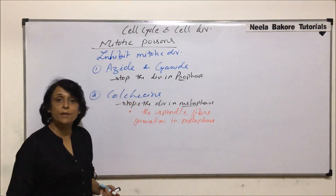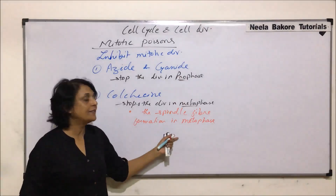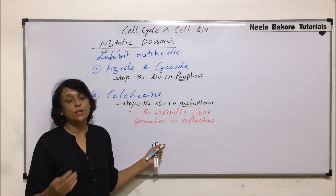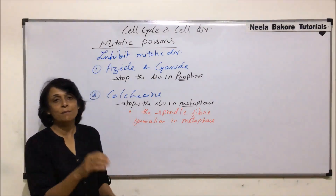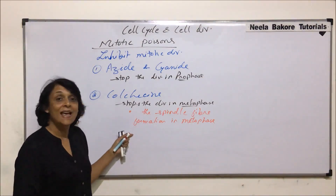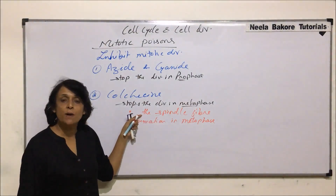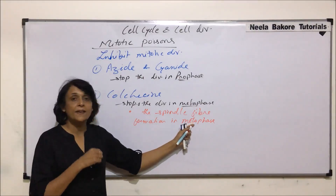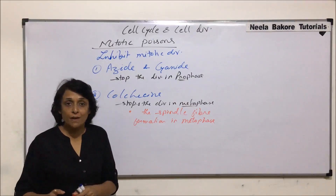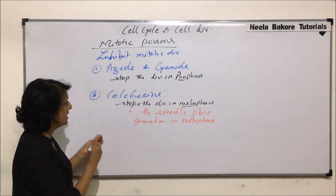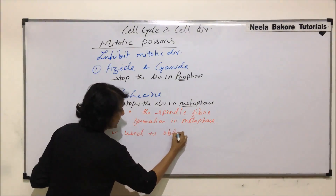In metaphase, the chromosomes come on the equatorial plane and would normally get separated during anaphase. But since DNA replication has already taken place — the sister chromatids are attached at the centromere — the chromosome number and DNA number are both doubled. This results in polyploidy. So colchicine can be used both to arrest cell division and to obtain polyploidy.